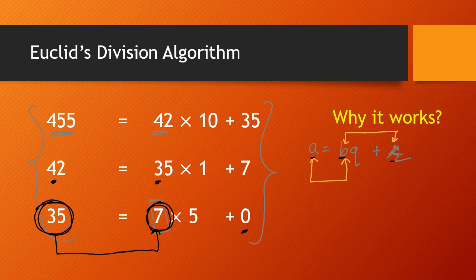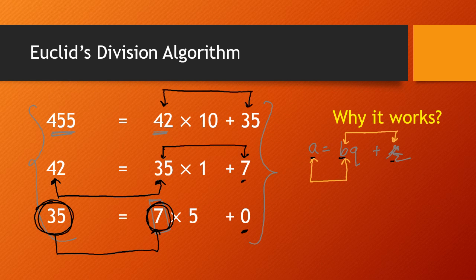Since HCF(A, B) = HCF(B, R), let us go to the previous step. HCF of 42 and 35 is the same as HCF of 35 and 7. The last step tells us HCF of 35 and 7 is 7, therefore HCF of 42 and 35 is also 7. Going one step back, since HCF of 42 and 35 is 7, this means HCF of 455 and 42 must also be 7. That is how this method works.